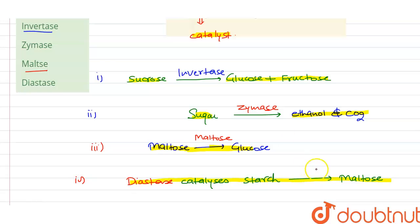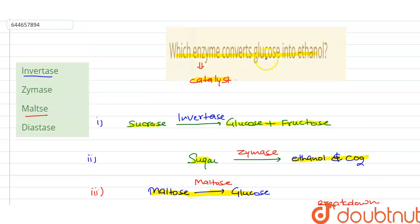So from the question, we need to convert glucose into ethanol. From here we can say that zymase will be the correct answer. I hope you got this concept. Thank you.